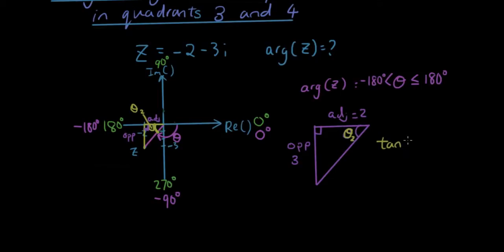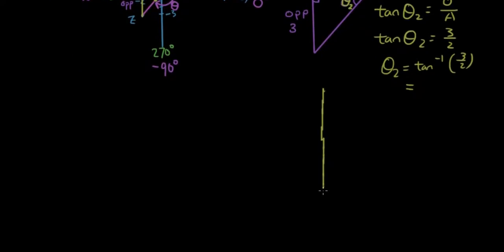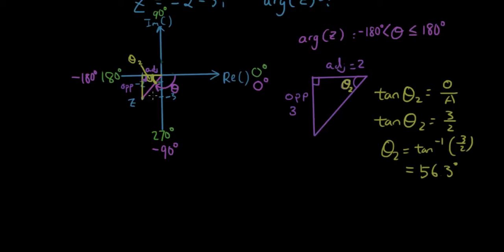So tan of theta2 is equal to opposite over adjacent. Tan of theta2 is equal to 3 over 2. So inverse tan, and putting that in your calculator, is 56.3 degrees. And if you want to find theta, which is the pink one, which is the argument of z, the argument of z is therefore equal to negative 180 degrees plus 56.3 degrees.